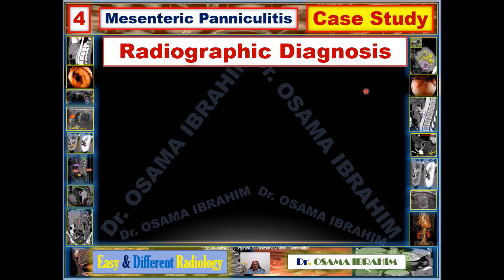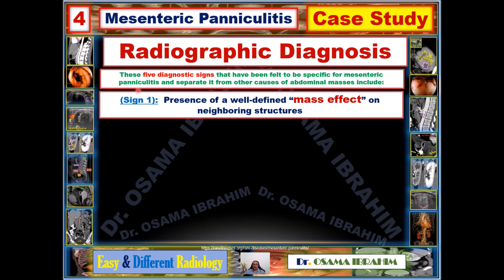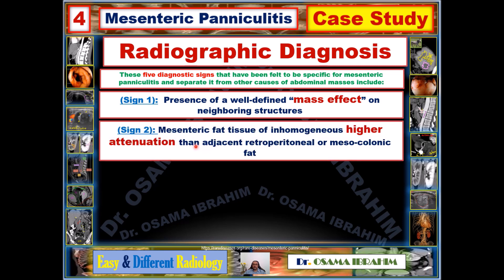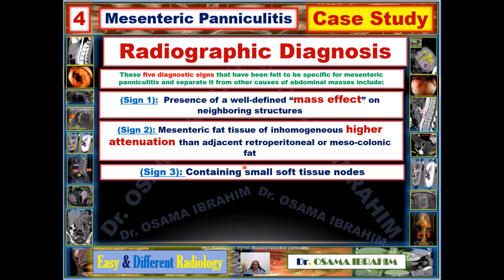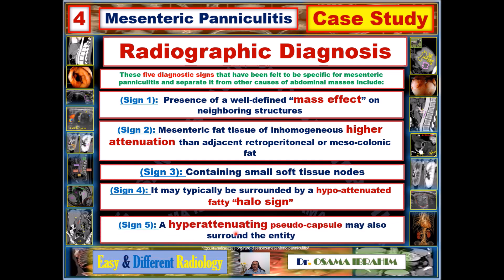Five radiographic diagnostic signs have been identified as specific for mesenteric paniculitis: Sign 1 — presence of a well-defined mass effect on neighboring structures; Sign 2 — mesenteric fat tissue with inhomogeneous higher attenuation than adjacent retroperitoneal or mesocolonic fat; Sign 3 — small soft tissue nodes contained within the lesion; Sign 4 — surrounding hyperattenuating fatty halo sign; Sign 5 — a hyperattenuating pseudocapsule.